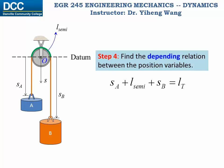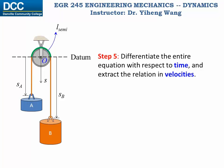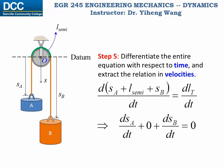Recognize again in this equation L-semi and LT are both constants, but SA and SB are variables with respect to time. And now we can take the previous equation and take the time derivative of the entire equation. And that becomes dSA/dt plus 0 plus dSB/dt equals to 0.